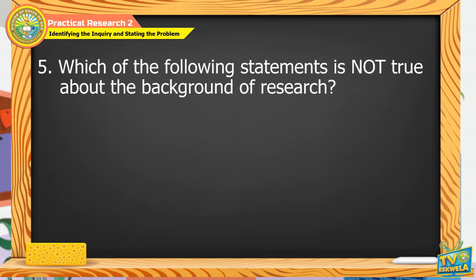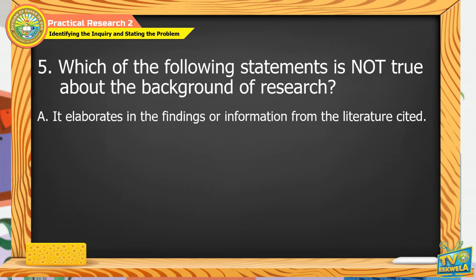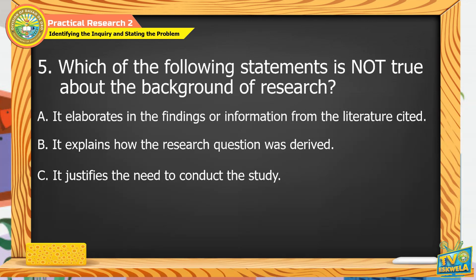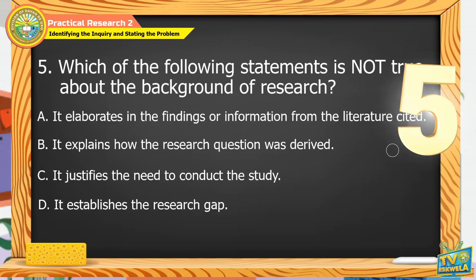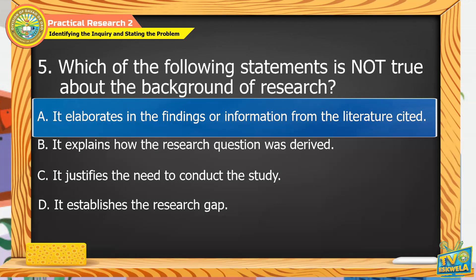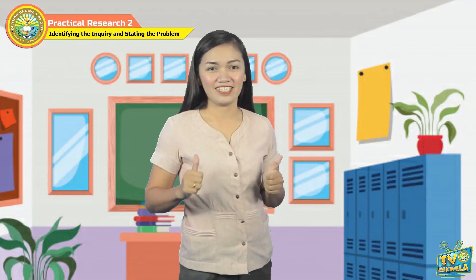Number 5. Which of the following statements is not true about the background of the research? A. It elaborates on the findings or information from the literature cited. B. It explains how the research question was derived. C. It justifies the need to conduct the study. D. It establishes the research gap. The answer is letter A. Perfect! It elaborates on the findings or information from the literature cited. You got it all right!